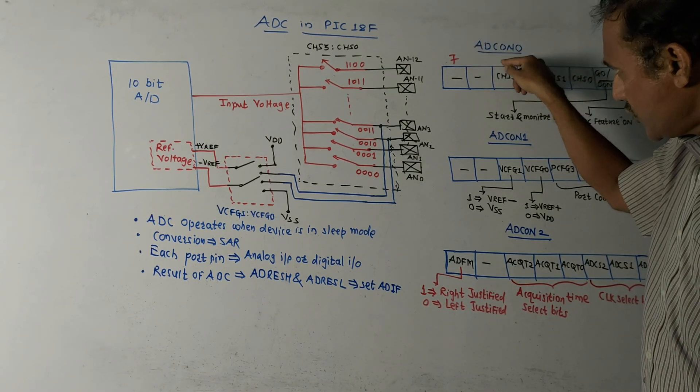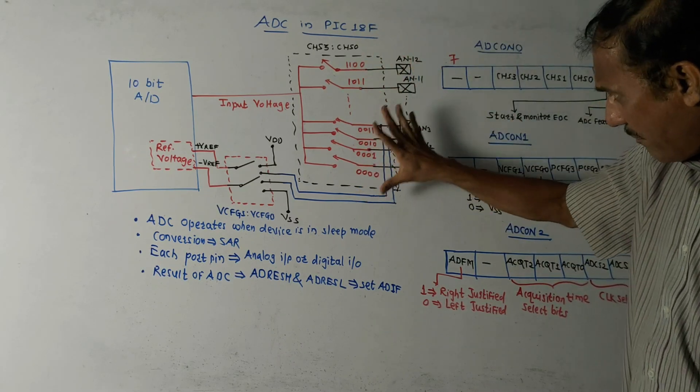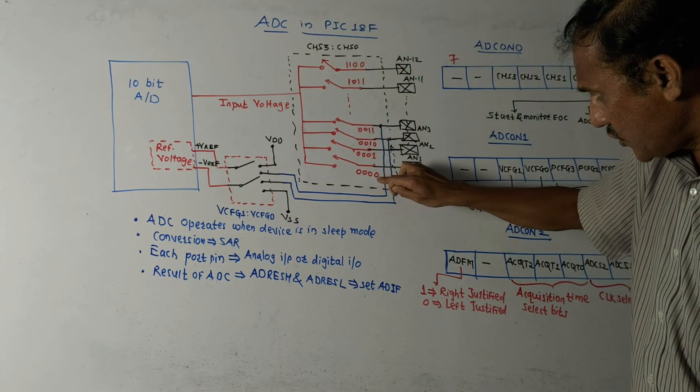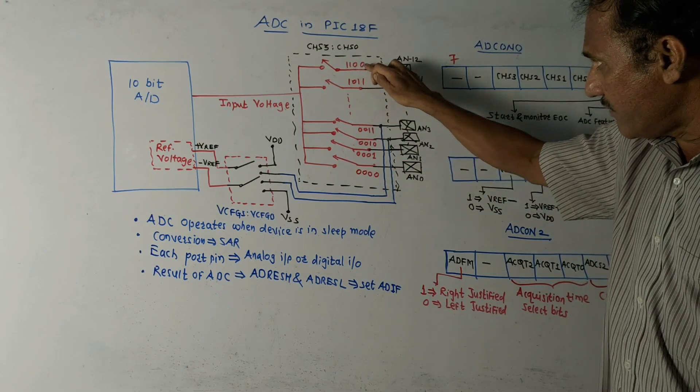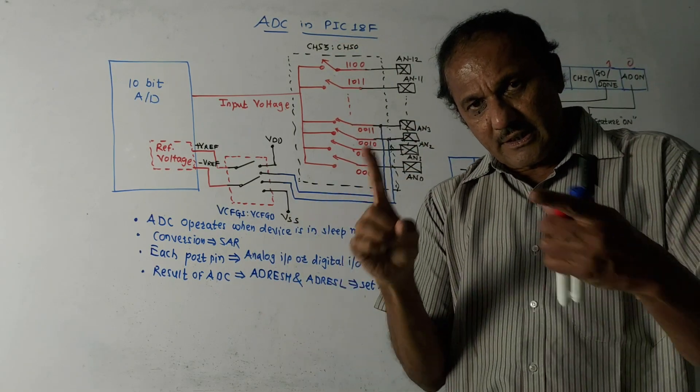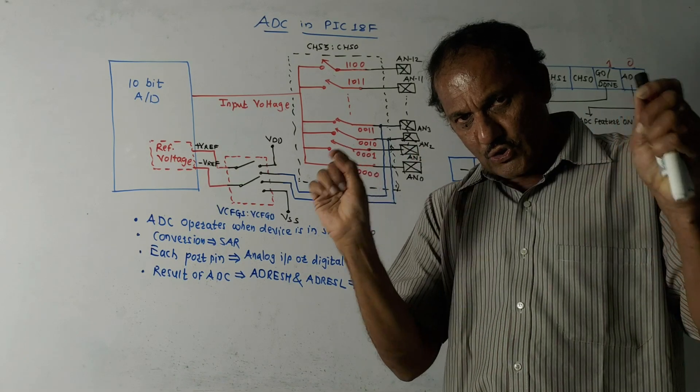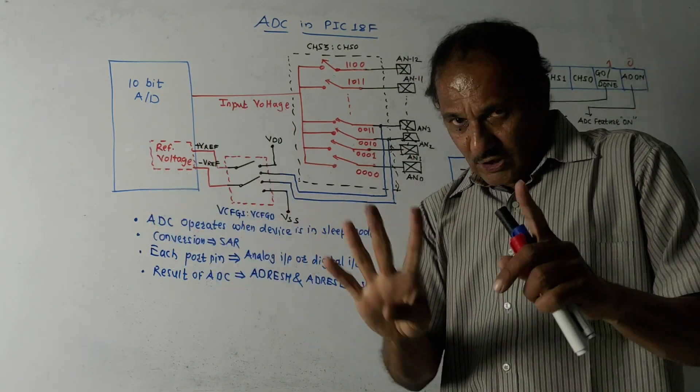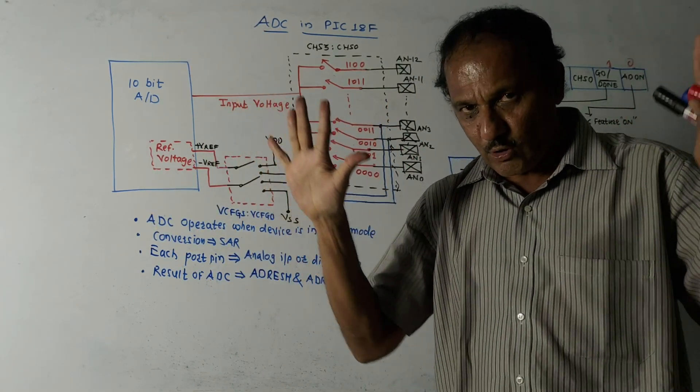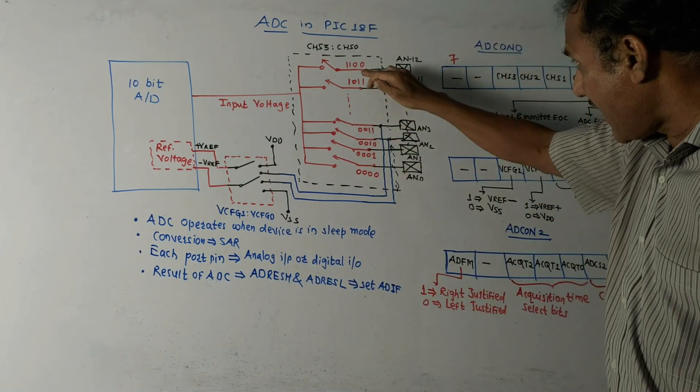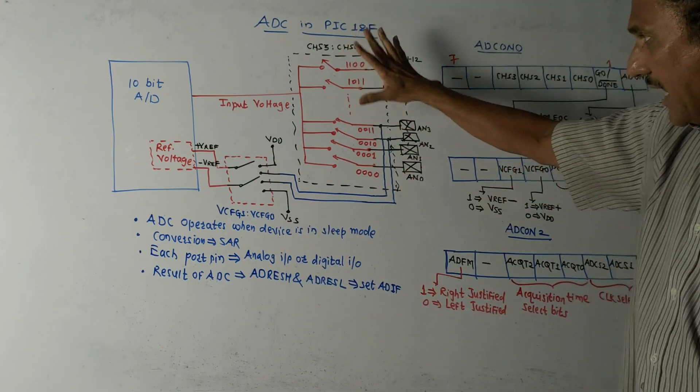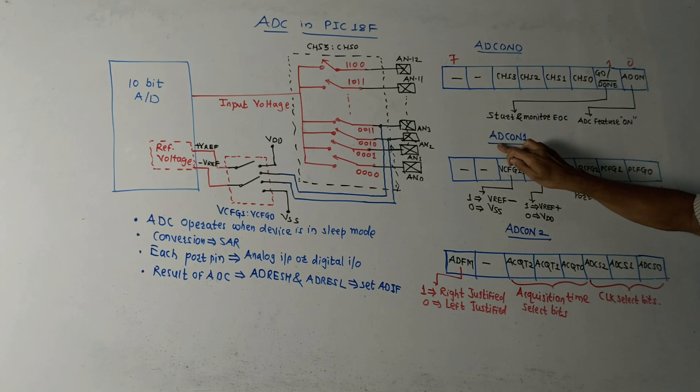Channel 0000 to 1111. Actually, the starting point is 0000 till 1111 because there are four bits, so total there will be 16 combinations, but after this, remaining combinations are unused. Then ADC control register one.